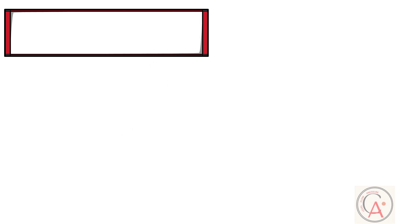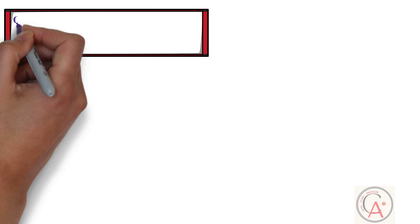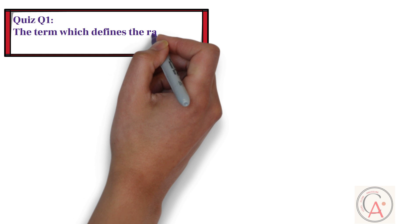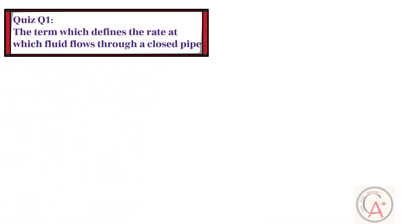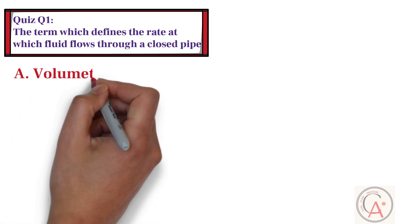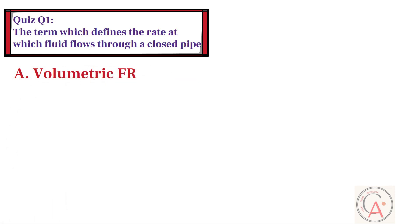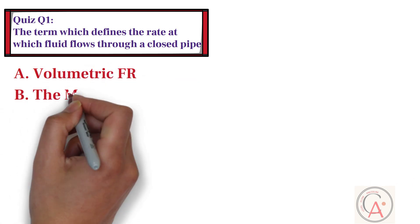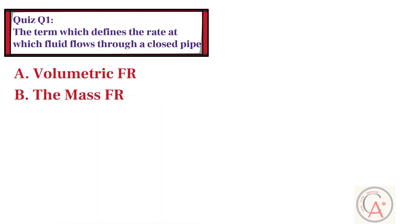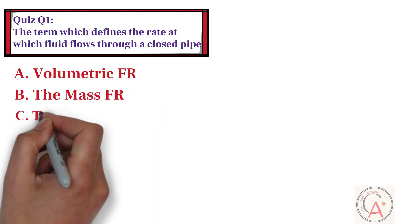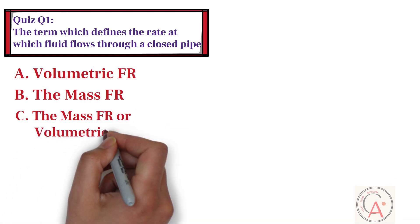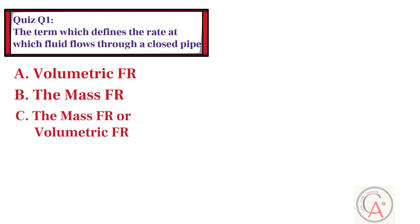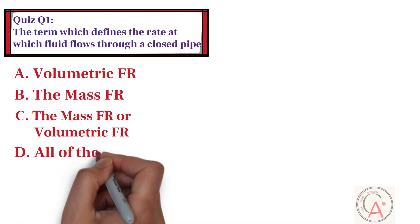Let's go to the first question. From the following options, which term defines the rate at which fluid flows through a closed pipe? Option A: it can be defined as volumetric flow rate. Option B: it can be defined as mass flow rate. Option C: it can be defined as either the mass flow rate or volumetric flow rate. And option D: all of the above answers.